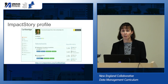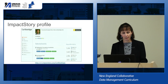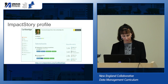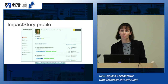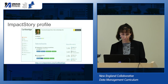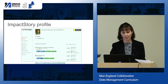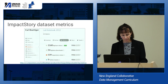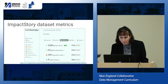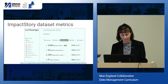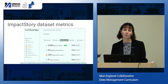ImpactStory is a product where you create a profile and track the impact of each of your publications. It can track a wide range of scholarly products: articles, datasets, figures, posters, slide decks, software products, and theses. Blue represents usage by scholars and green represents usage by the public. The lab notebook example shown is highly viewed and discussed by both audiences — this kind of information can be very powerful for researchers to understand who is looking at their data and in what context.